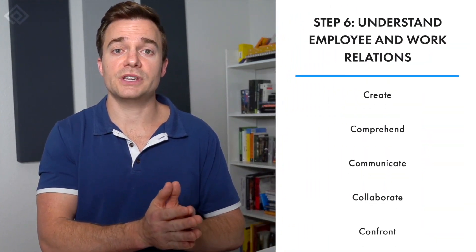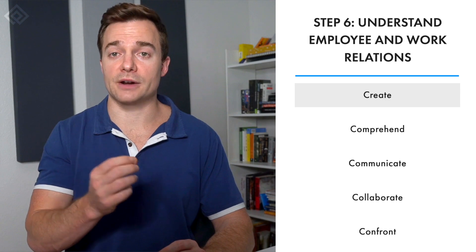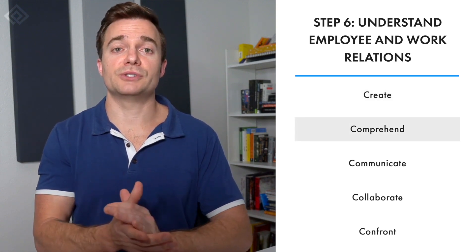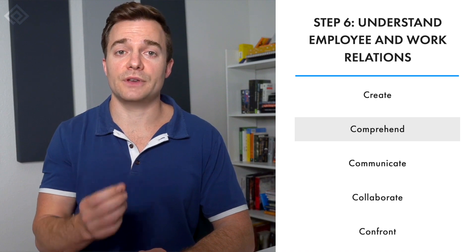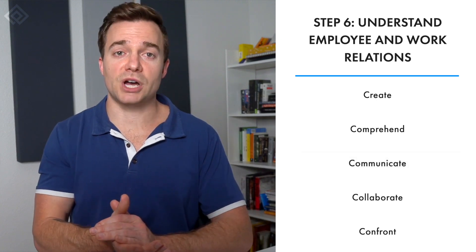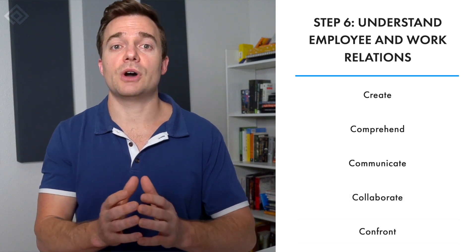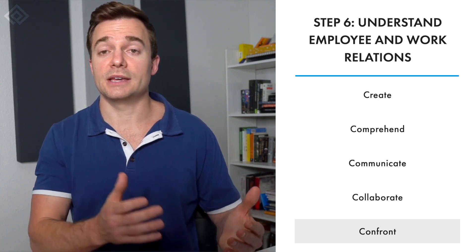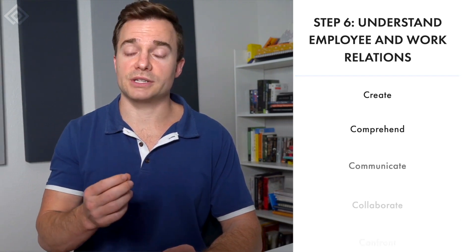Next, you must learn the five C's to understand how to contribute to employee and work relations. The first C is to Create — you must learn to create an employee team that works together to build a brighter future. The second is to Comprehend — understand past, present, and future challenges for effective risk management. Third is Communication — maintain effective communication through open channels. Fourth is Collaboration — work with employees to develop a smarter, stronger workspace. Fifth is to Confront — address employees for both mistakes and achievements to show differences between good and bad outcomes.